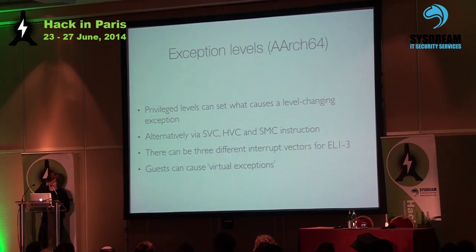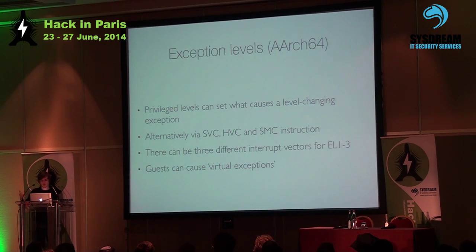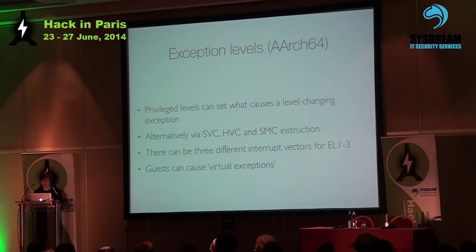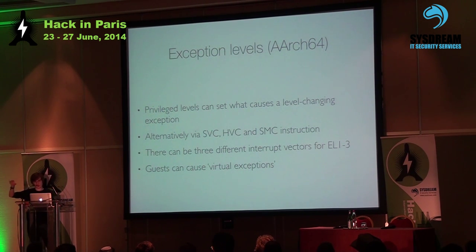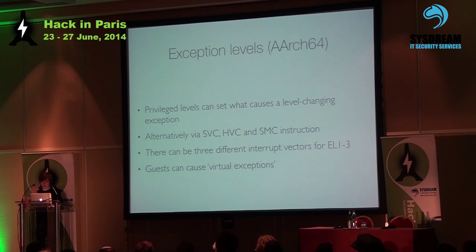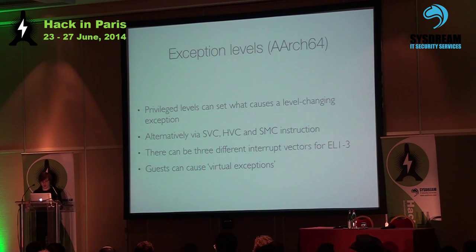Each privilege level except EL0 can set what causes a level change. You could have a hardware button that causes the CPU to jump into EL3, or a specific data access that causes a jump to EL2 for the hypervisor to manage direct memory access. You can also explicitly call down from your exception level, but never up. EL0 could issue an SMC instruction and jump into the secure monitor. This allows very fine configuration of different permissions per exception level, so even your OS level can be very locked down, which is interesting for microkernel-style hypervisors.